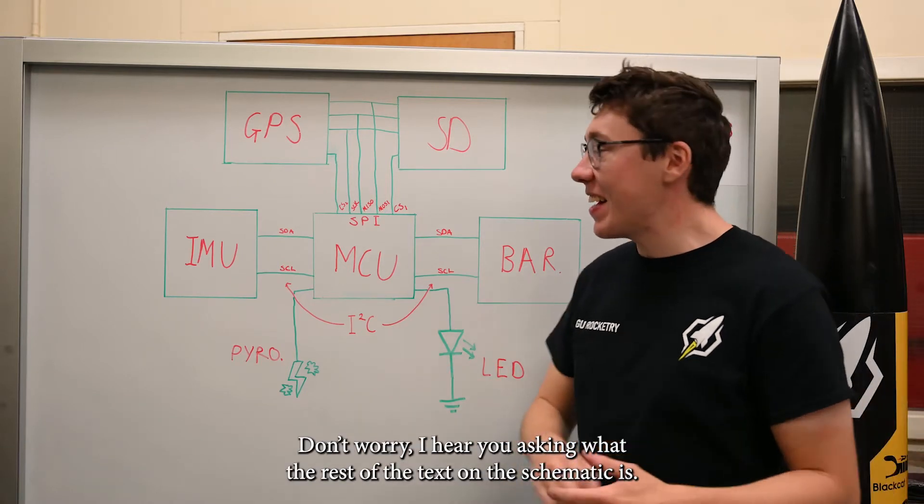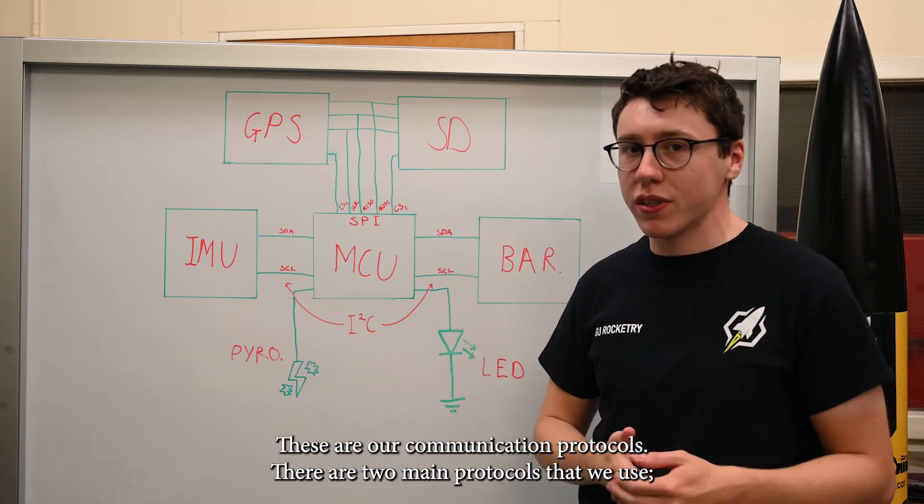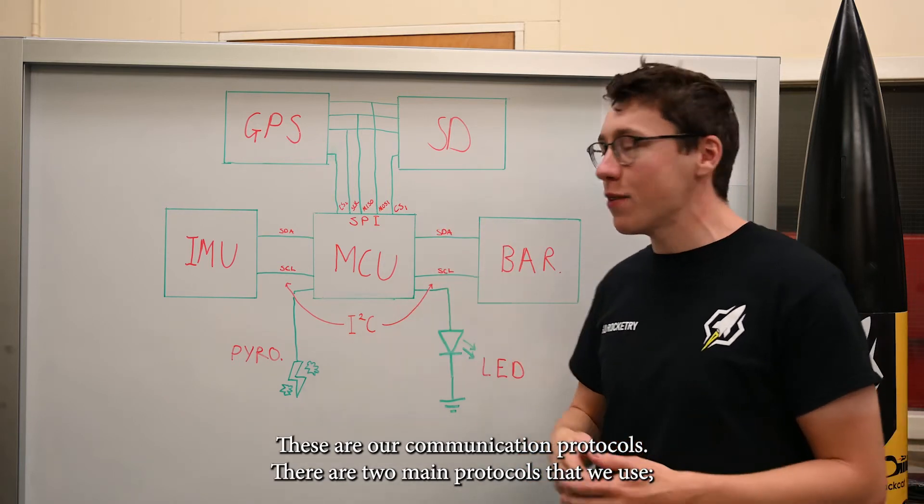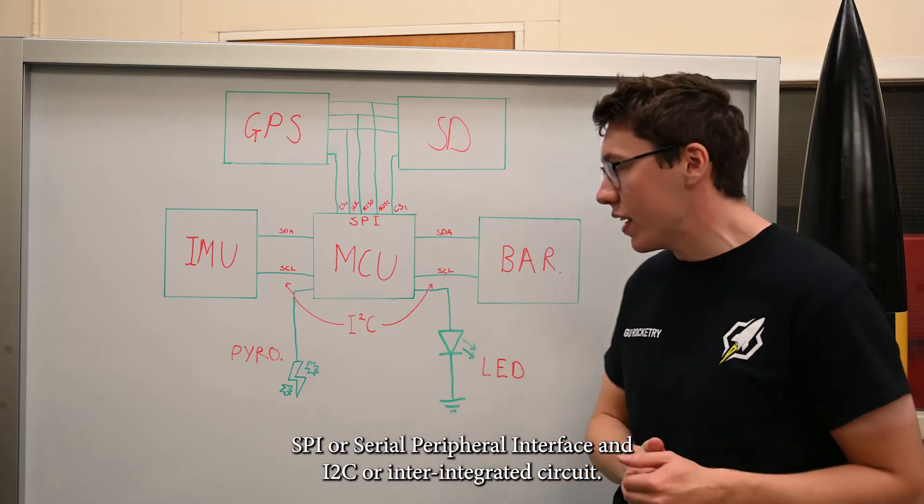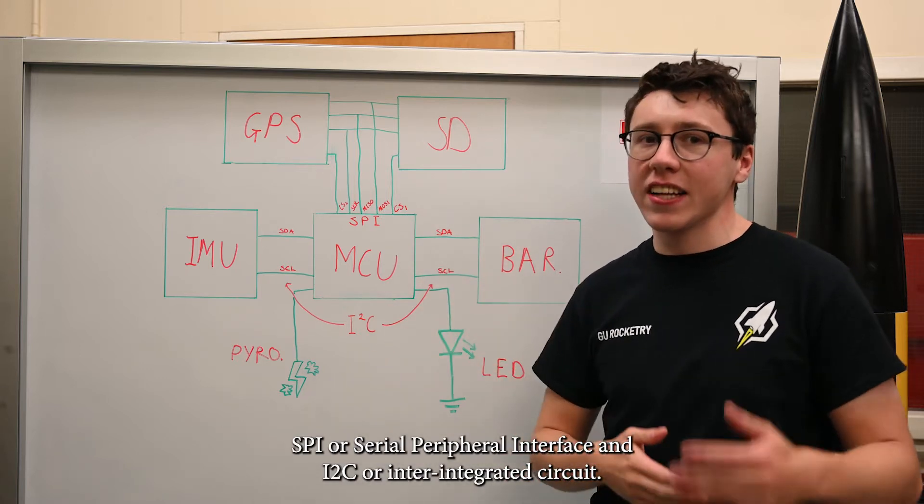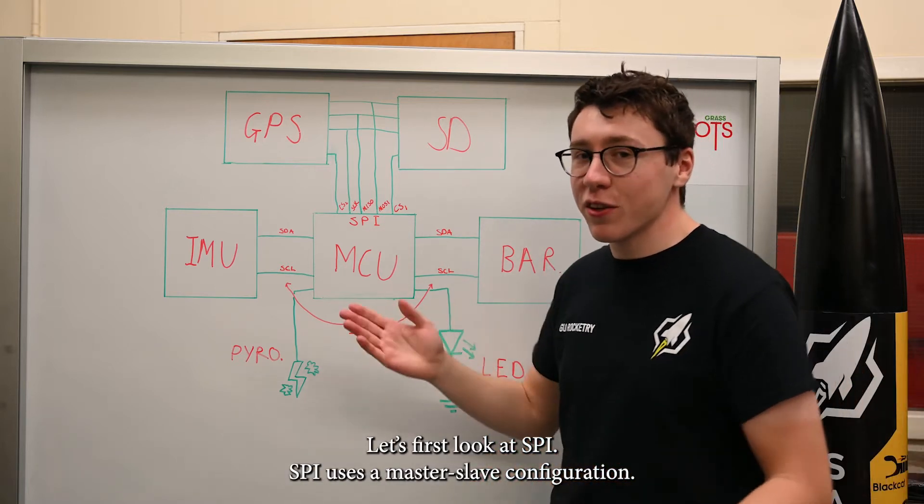Don't worry, I hear you asking what the rest of the text on the diagram is. Now these are our communication protocols. There are two main types and there are two that we use: SPI, or Serial Peripheral Interface, and I2C, Inter-Integrated Circuit. And first, let's have a look at SPI.